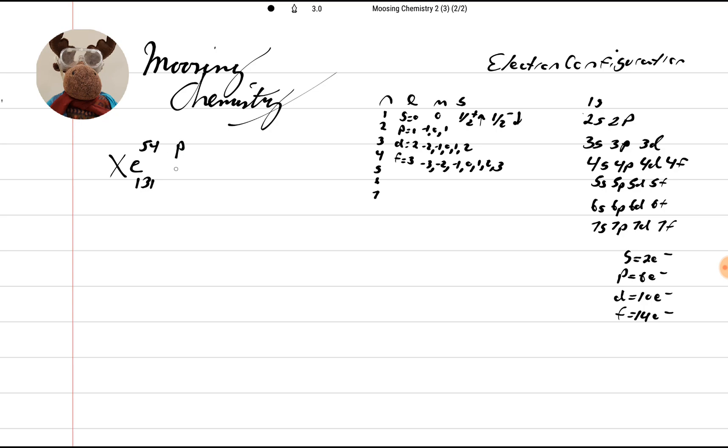I'm going to write 131 in there. So let's look at the PEN first. So we have 54 protons. To be electrically neutral, we would need 54 electrons, and then we would need 77 neutrons.